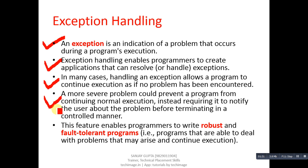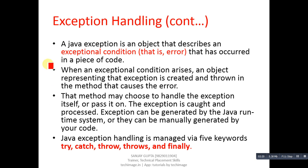The fourth point says a more severe problem could prevent a program from continuing normal execution, instead requiring it to notify the user about the problem before terminating in a controlled manner. The last point says this feature enables programmers to write robust and fault-tolerant programs — programs that are able to deal with problems that may arise and continue execution. In summary, an exception means any error that can occur during execution of the program; you can handle that error, show an error message to the user, and implement robust or fault-tolerant programs.